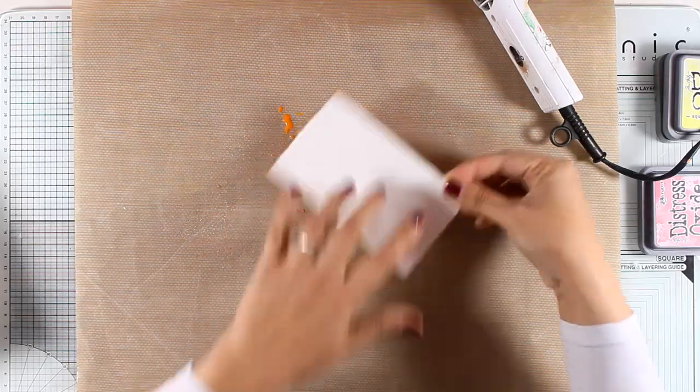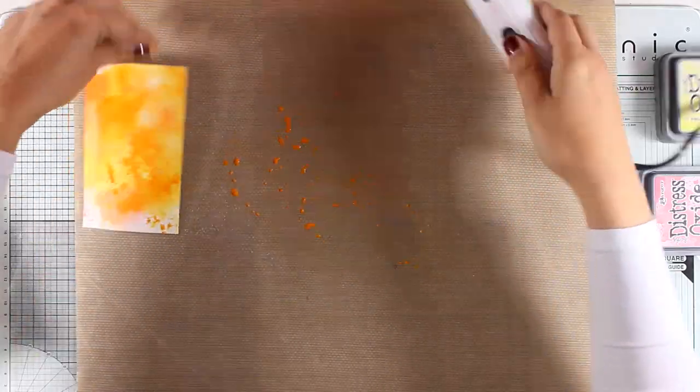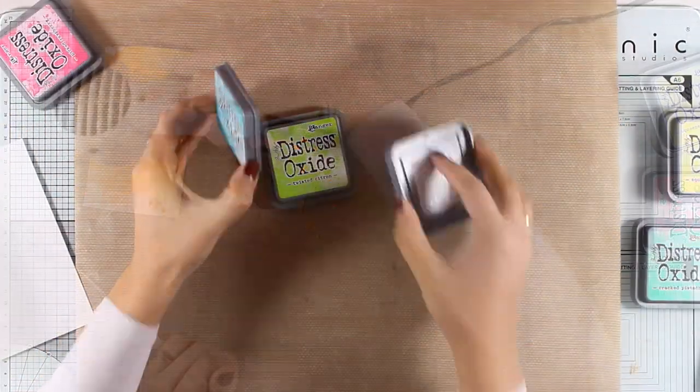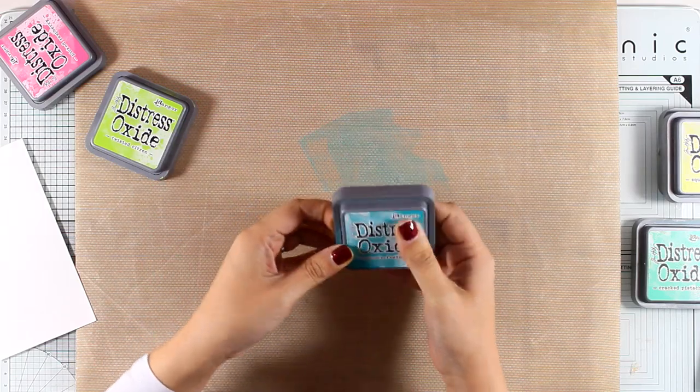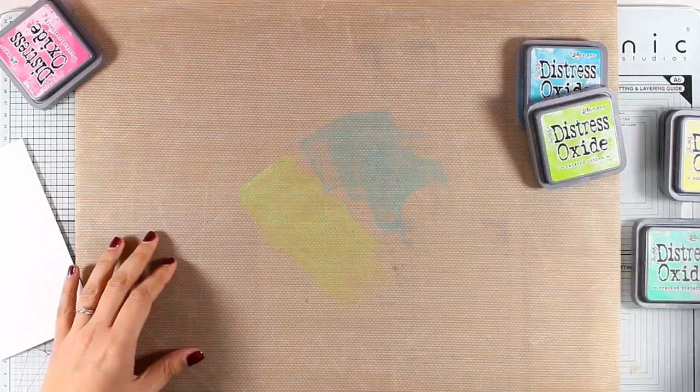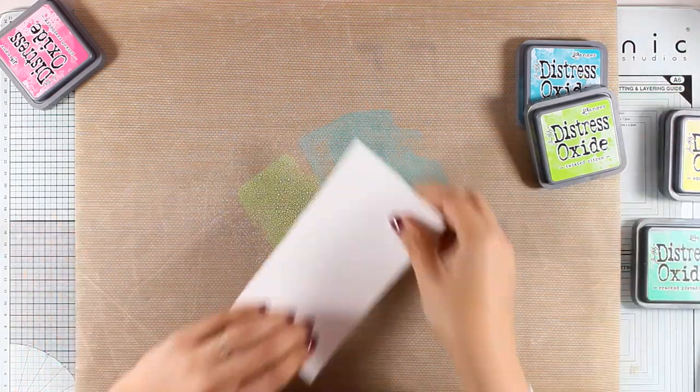You see that every time I dip I make sure that this layer is dry and then I dip again. You can repeat the same process again and again with distress oxide inks until you are happy with the outcome. The idea here is to create three different pattern papers and I will be using those later on to stamp my feathers.